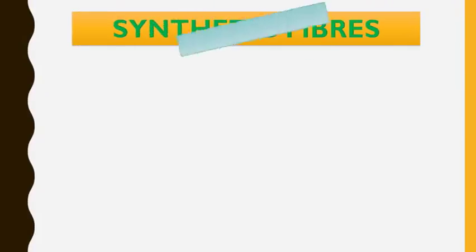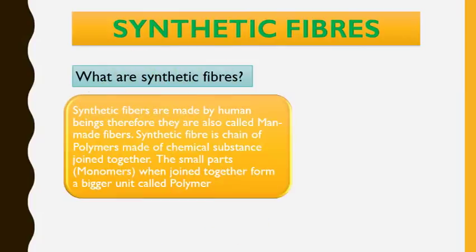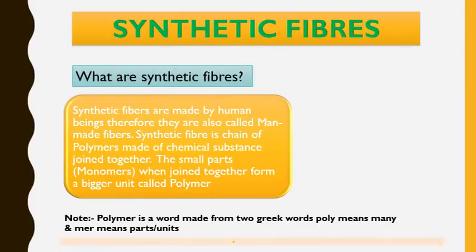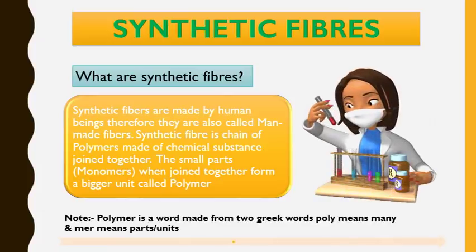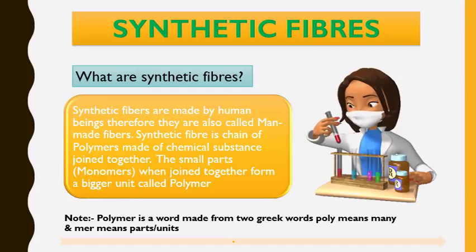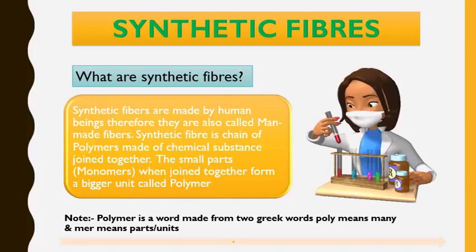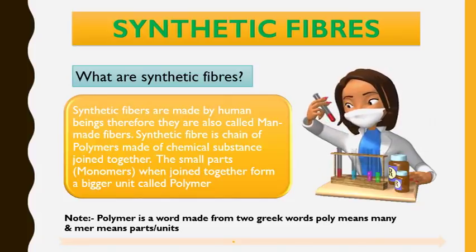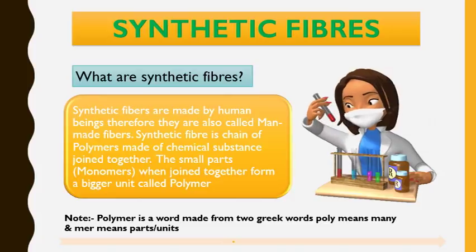Moving forward to what are synthetic fibers. Synthetic fibers are basically made by human beings, therefore they are called man-made fibers. Synthetic fiber is basically a chain of polymers which are made of a chemical substance and they are joined together. These small parts are called monomers, which are joined together to form a bigger unit called a polymer.